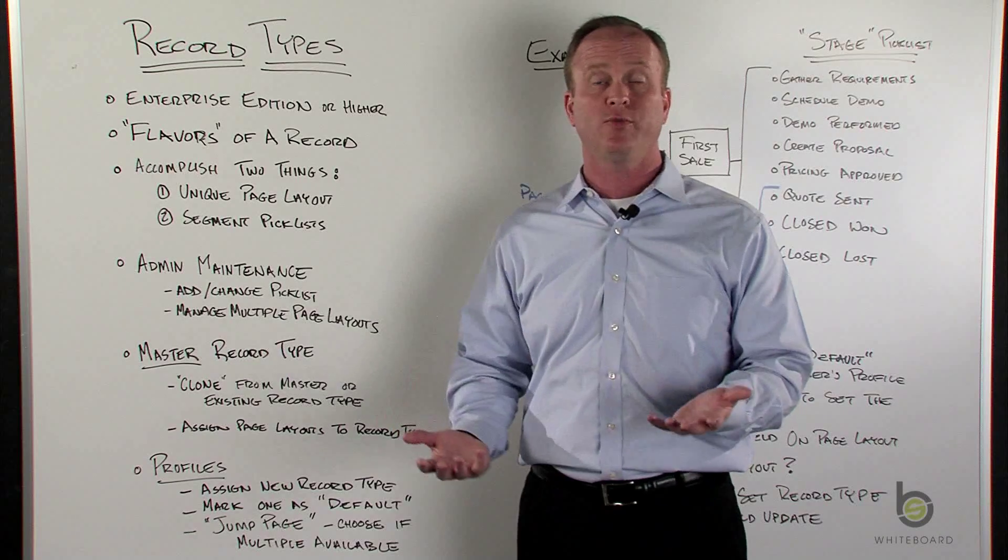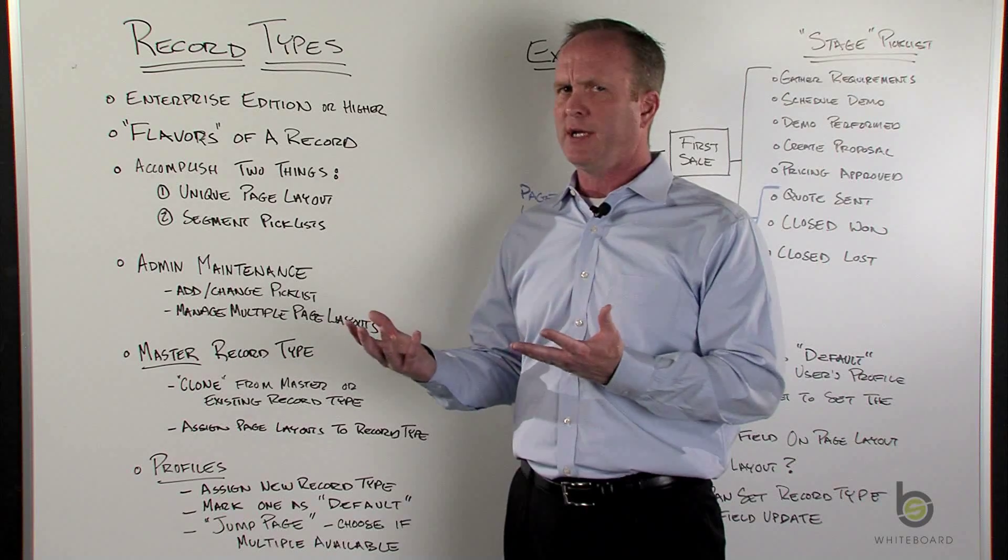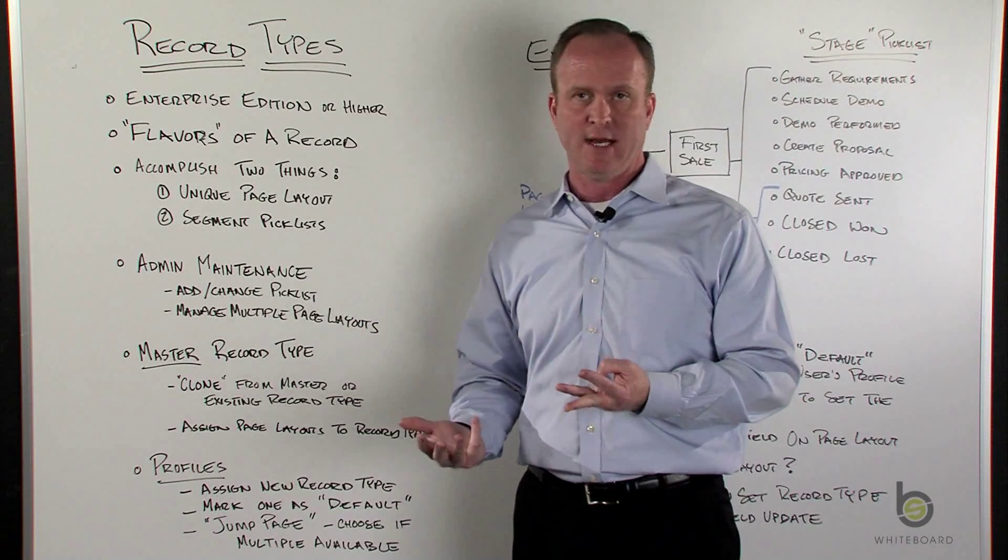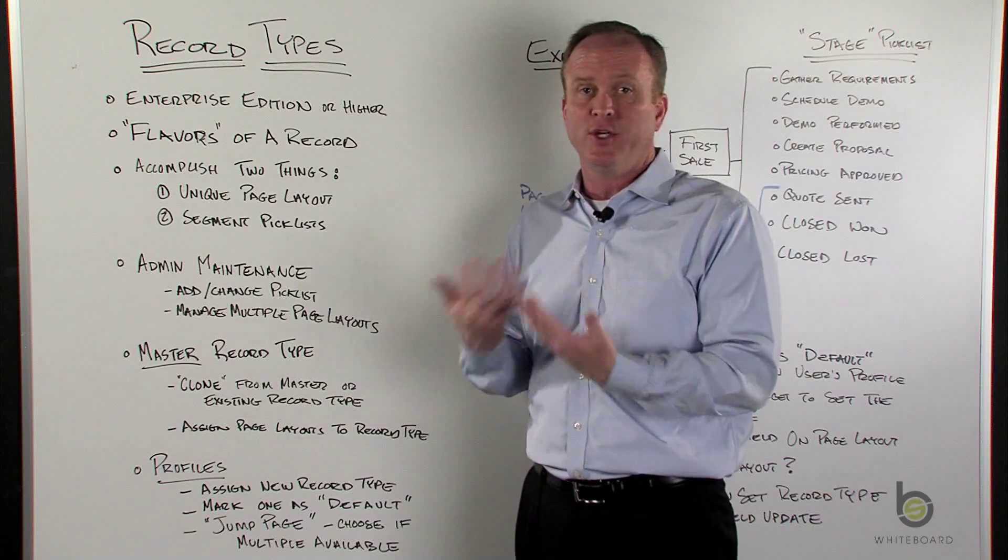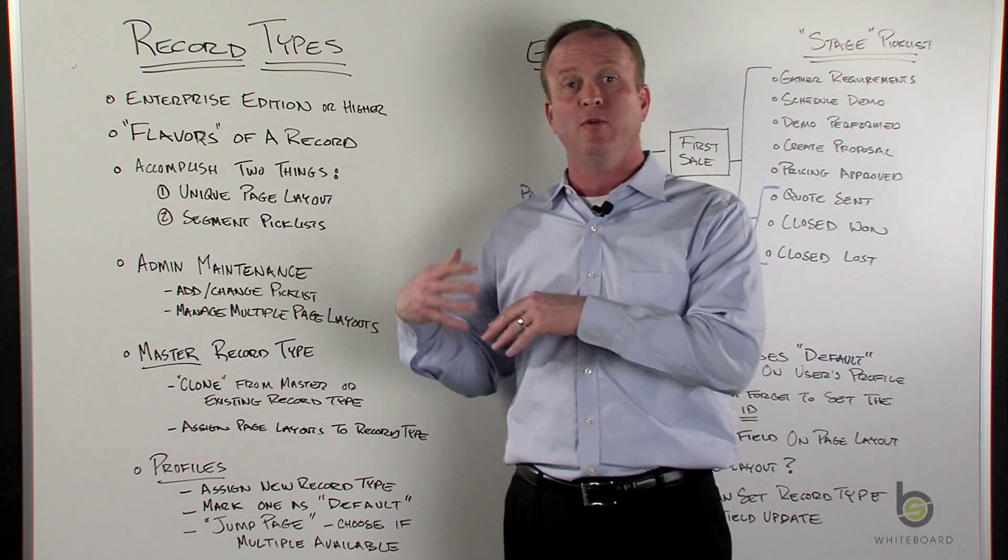And talking about options being available, if a user has multiple record types available and they go to create a new record, they get a new screen. So if you click the new button, say on leads, and they have three record types available, they're going to have what I call the jump page.